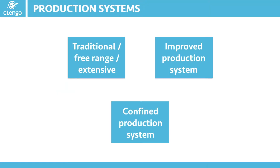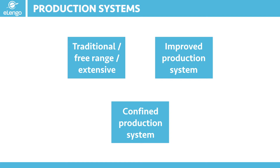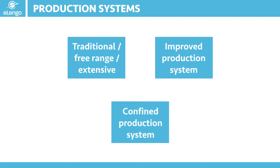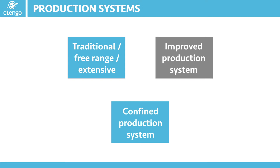Let us now look at the production systems that are mainly used for indigenous chicken. We have three production systems: the traditional one, also known as the free range or extensive method; the semi-intensive, also referred to as the improved production system; and the intensive, or what we call the confined production system. For the purpose of this course, our focus is going to be on the semi-intensive method. However, I'm going to give a brief description of each of the production systems for the learners to be more aware of what they involve.